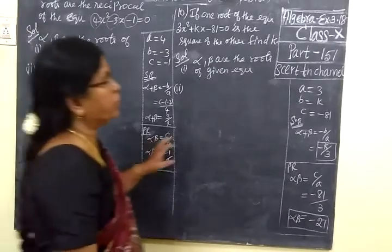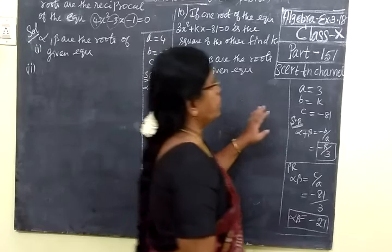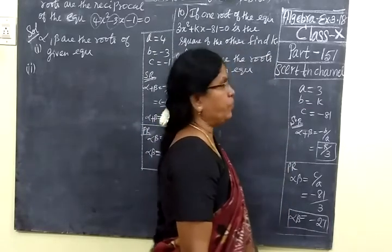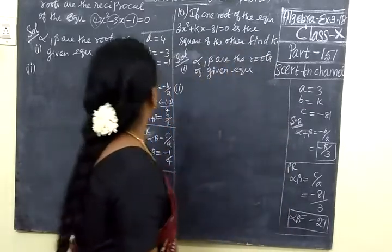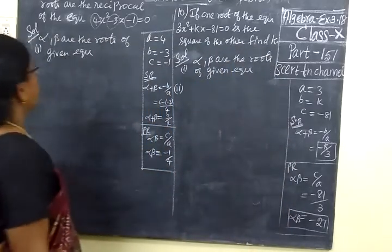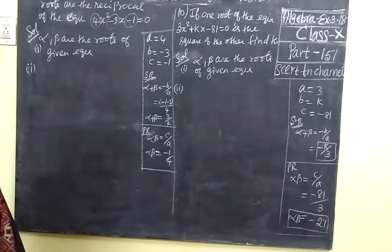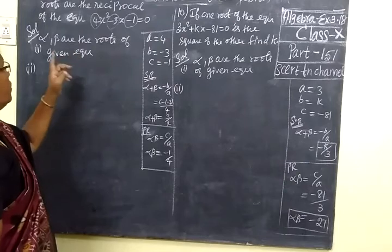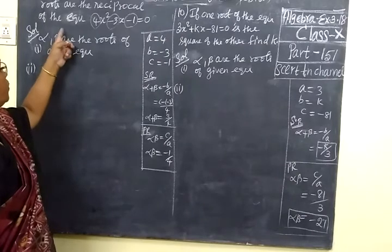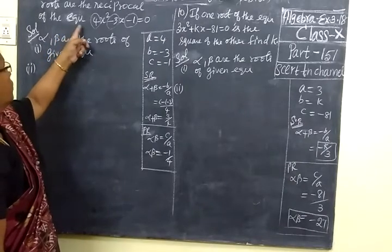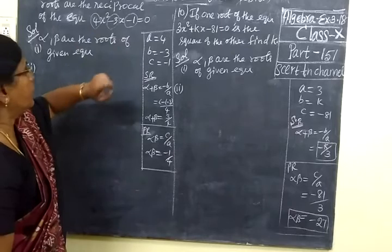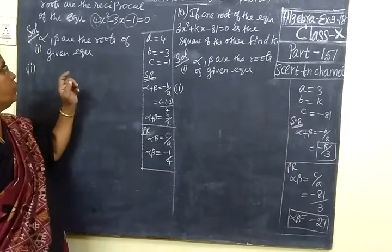Good morning students. Now we are seeing exercise 3.18, law part 151. In this we are seeing the 9th sum and 10th sum. Find the quadratic equation whose roots are the reciprocal of the equation 4x squared minus 3x minus 1 equal to 0.